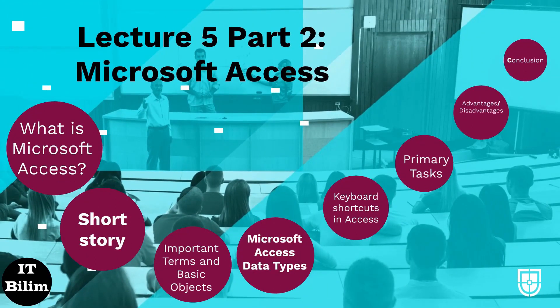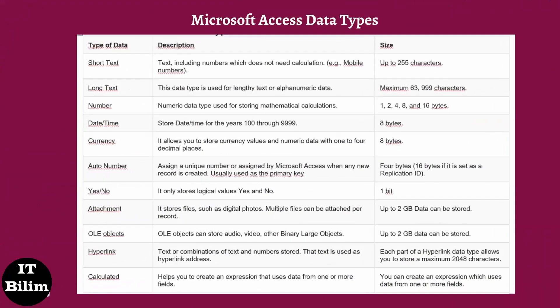Microsoft Access data types. Microsoft Access common data types are listed below. Short Text: text, including numbers which do not need calculation, e.g., mobile numbers. Long Text: this data type is used for lengthy text or alphanumeric data. Number: numeric data type used for storing mathematical calculations.